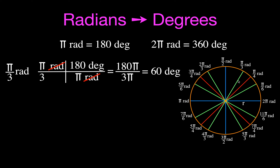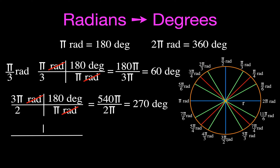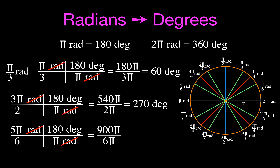For three pi over two radians: put pi radians on the bottom and 180 degrees on the top, cancel, and you get 540 divided by 2, which is 270 degrees. For five pi over six radians: radians cancel, leaving 900 divided by 6, which is 150 degrees.